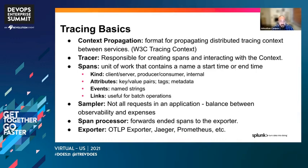We also have the sampler, which we leverage when not all requests in a given application need to be captured — we want to balance observability and expenses. And then we have the span processor, which is responsible for forwarding these spans to the exporter — that exporter being potentially the OTLP exporter, the Jaeger exporter, Prometheus, or Splunk Observability Cloud.